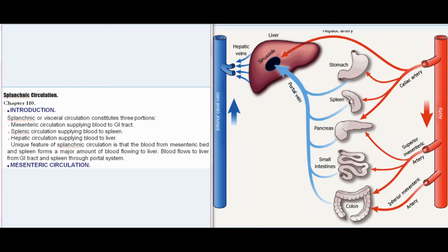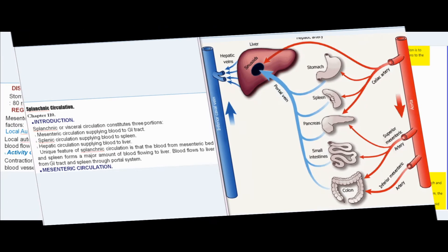Splanchnic Circulation - Chapter 110 Introduction. Splanchnic or visceral circulation constitutes three portions: mesenteric circulation supplying blood to the GI tract, splenic circulation supplying blood to the spleen, and hepatic circulation supplying blood to the liver. A unique feature of splanchnic circulation is that blood from the mesenteric bed and spleen forms a major amount of blood flowing to the liver through the portal system.